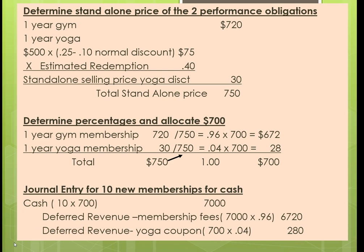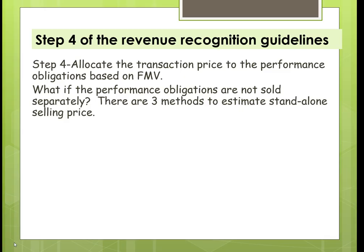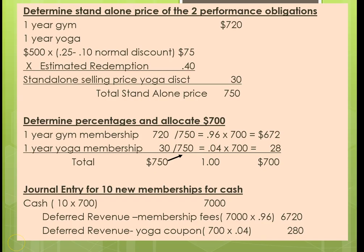What does our journal entry look like for 10 new memberships? It would be cash — 10 times $700 — with credits to deferred revenue for membership fees and deferred revenue for the yoga coupon. The membership revenue will be allocated over time, and the deferred revenue yoga coupon will be recognized when the coupon is exercised.